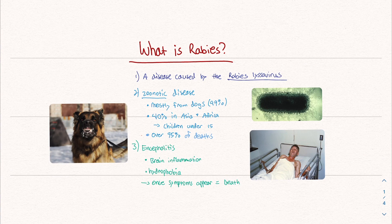So what is rabies? Rabies is a disease caused by the rabies lyssovirus. This is what's called a zoonotic disease, which means it comes from animals. Most of those animals are dogs — about 99% of the animals with rabies are dogs. Asia and Africa are where about 40% of the deaths in children under 15 occur, and 95% of the total rabies deaths occur. So it's very prevalent in Asia and Africa.